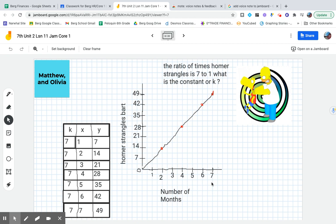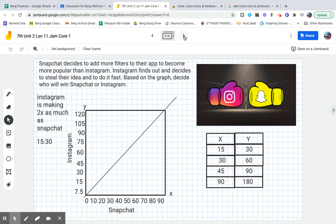Your next graph is brought to you by Bethany. Snapchat decides to add more filters to their app to become more popular than Instagram. Instagram finds out and decides to steal their idea and do it fast. Based on the graph, decide who wins, Snapchat or Instagram. Well, you can see she already answered that.